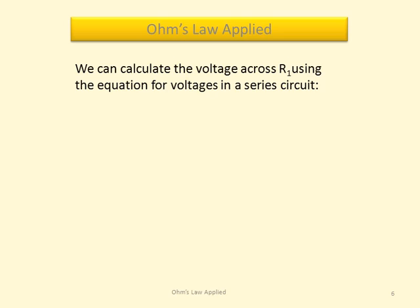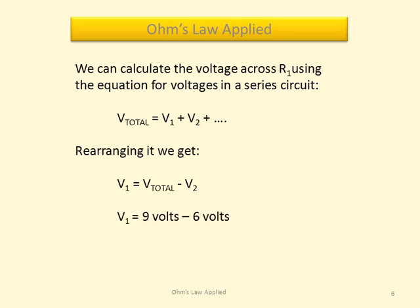We can calculate the voltage across R1 using the equation for voltages in a series circuit. The total voltage equals the sum of the voltages across the loads. We can arrange this formula to get V1 equals V total minus V2. Or V1 equals 9 volts minus 6 volts. That gives us 3 volts on V1.